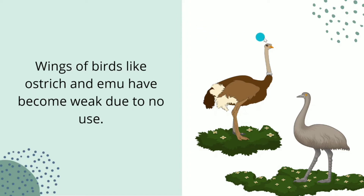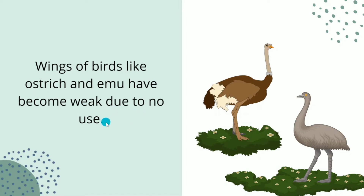Moving on to another example: most birds have wings, but birds like ostrich and emu do not have functional wings like other birds. Other birds fly using their wings, but these two birds cannot fly. Although their legs are really strong and they can run fast, their wings are not as functional. Wings of birds like ostrich and emu have become weak due to no use, since they are not using them for flying.